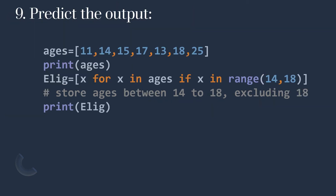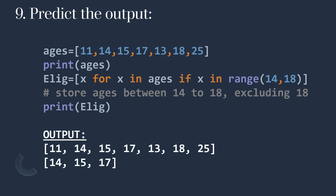Now predict the output. Ages is a list containing some values. Another list, alist, stores [x for x in ages if x in range(14, 18)]. It will store ages between 14 and 18, where 18 is excluded. So printing alist shows only the values 14, 15, and 17.